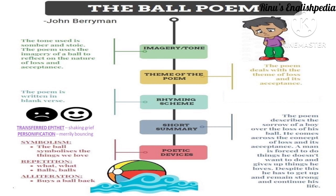Whenever a word is repeated for emphasis, the literary device of repetition has been used. Alliteration is the repetition of the same sound, not the same word. When the same sound repeats across different words, that is alliteration. For example, 'no one buys a ball back' — here the 'b' sound in 'buys,' 'ball,' and 'back' is being repeated, therefore it is alliteration.